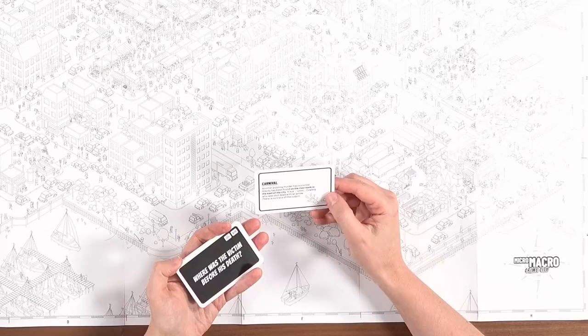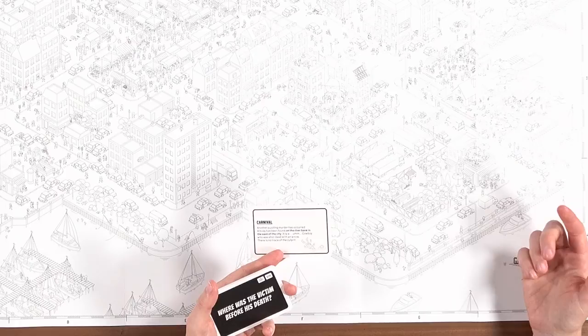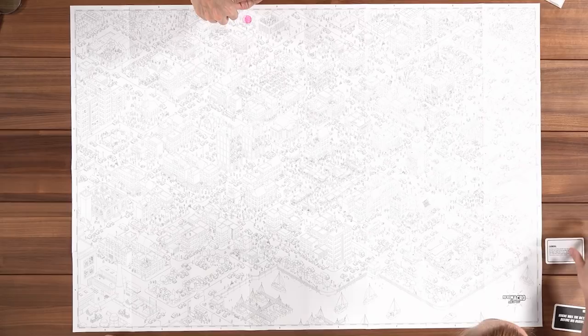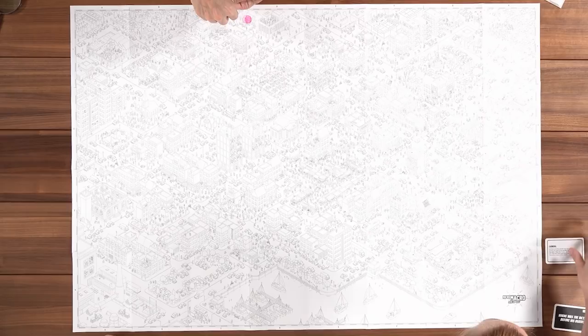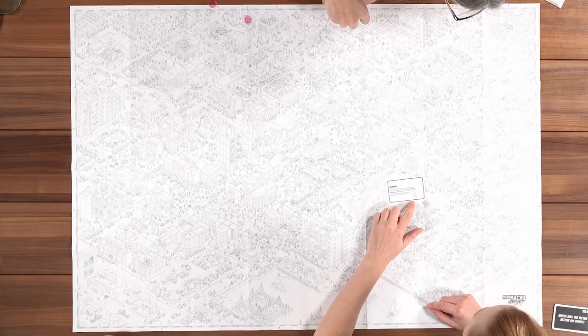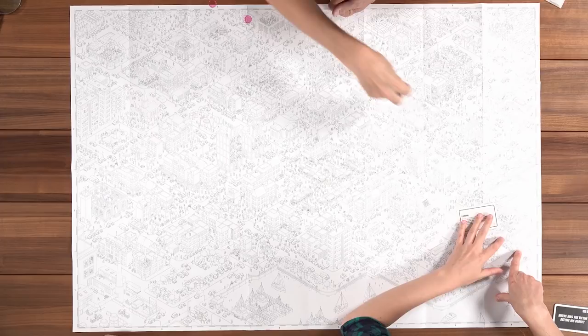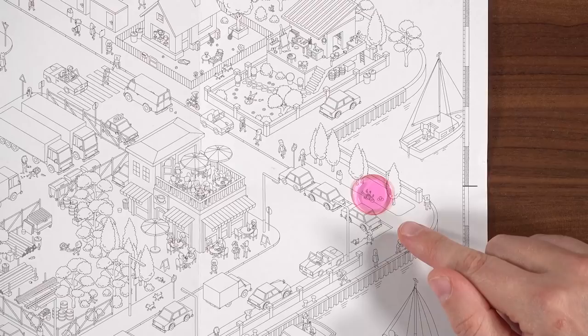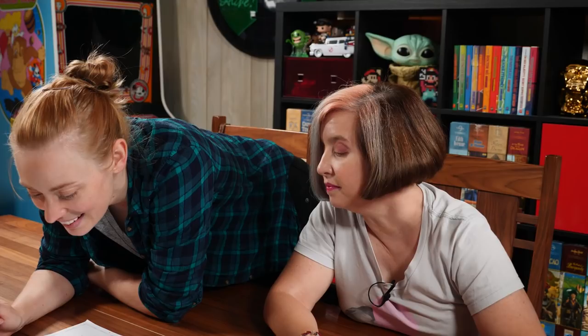Carnival! Another puzzling murder has occurred. A body has been found on the riverbank in the east of the city - it's a cowboy who was shot dead with an arrow. There is no trace of the culprit. We find him on the riverside - he's dead with his cowboy hat. Let's zoom in. Where was the victim before his death? There's a whole bunch of people with arrows here - a Native American, a knight, an archer, a Wonder Woman type.